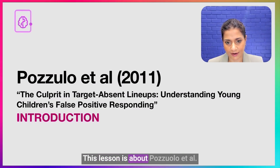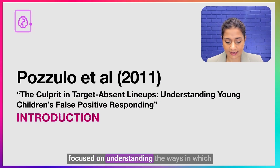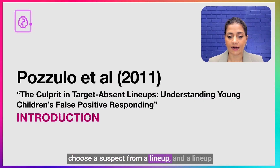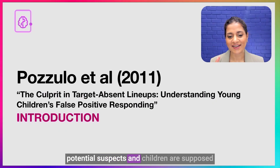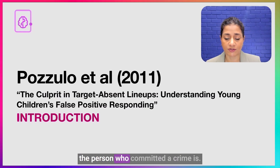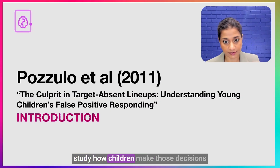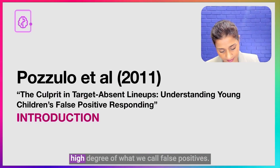This lesson is about the Pozzuolo et al. study, which was done in 2011. It focused on understanding the ways in which children respond when they are asked to choose a suspect from a lineup. A lineup is essentially where you have potential suspects and children are supposed to choose who they think the perpetrator of a crime is. Pozzuolo and her team wanted to study how children make those decisions and why, particularly with children, you find a high degree of what we call false positives.